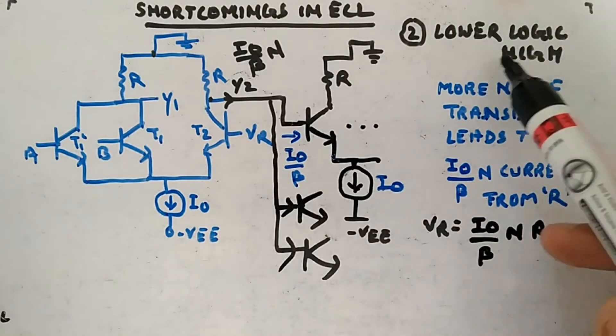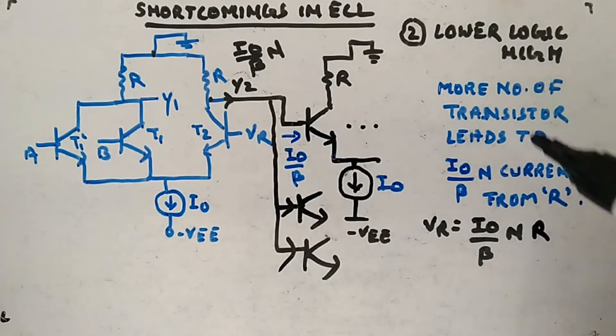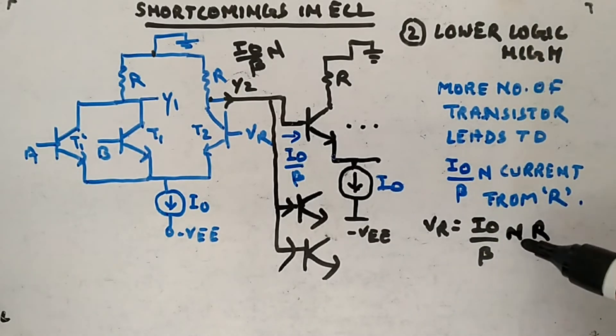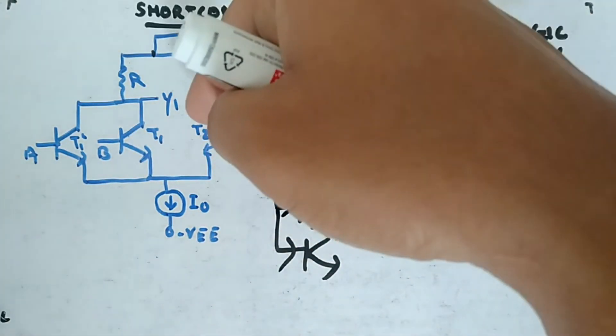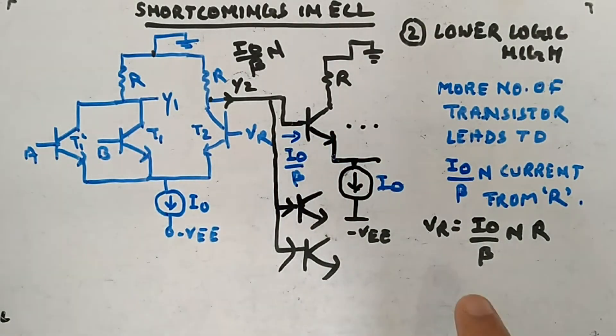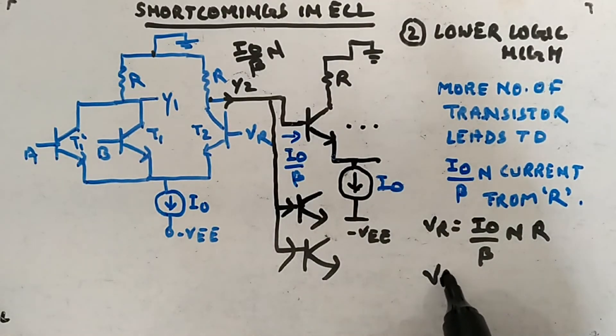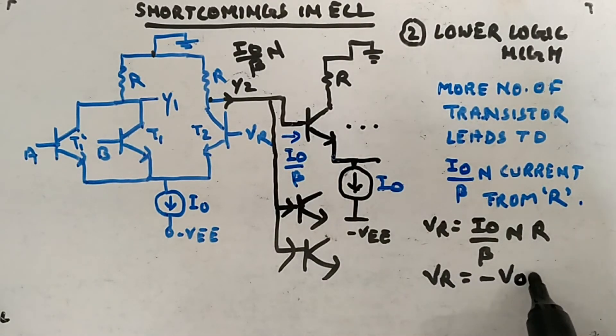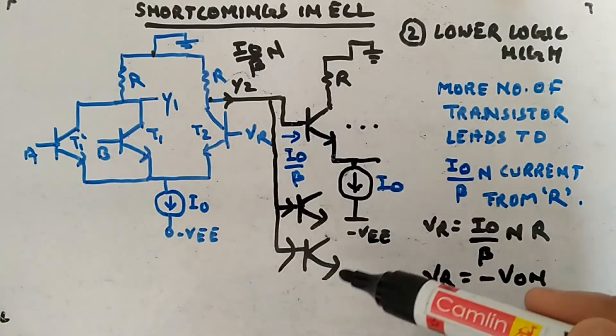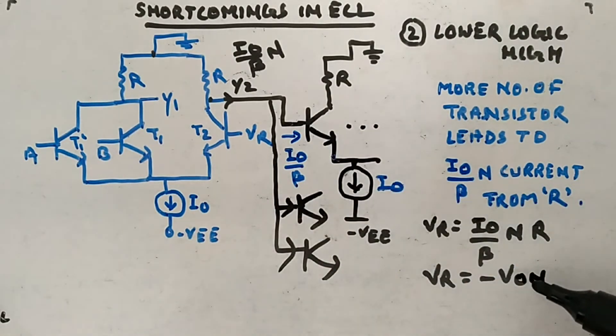It's a minus sign between this and this point. You are taking the voltage and current is coming opposite, so more negative you will have logic high. Lowering of logic high. This guy is increasing as you increase the number of fan outs. Since you are taking the voltage like this and current is coming in opposite direction, you will have more negative value of VR.